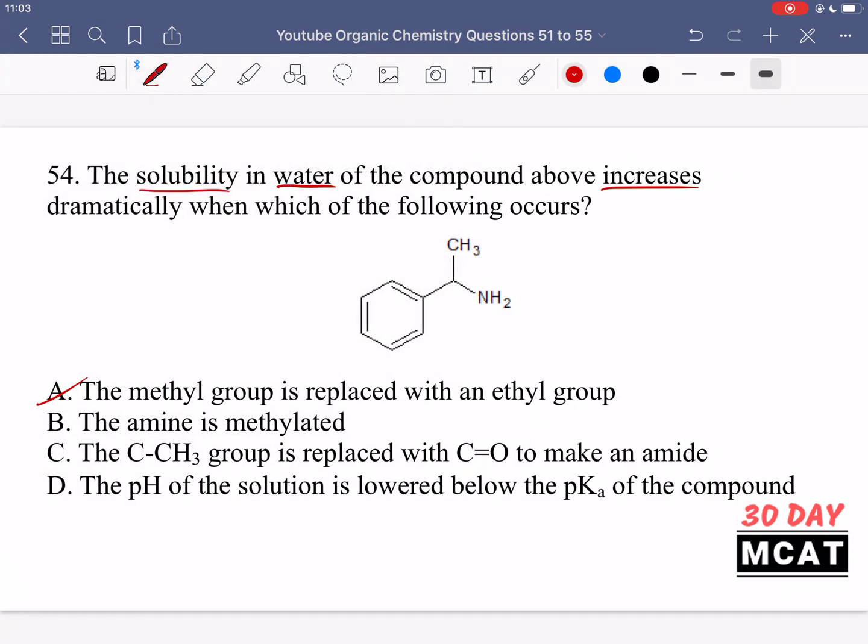Option B is saying if the amine is methylated. Same as with option A, that would make, so adding a CH3 group right here would make the nitrogen, it would make the overall compound more hydrophobic and therefore less dissolvable in water. The main part of this molecule that helps it dissolve in water is the nitrogen, which is able to have hydrogen bonding occur. That's the main part that's making it dissolve in water. So you don't want to get rid of that.